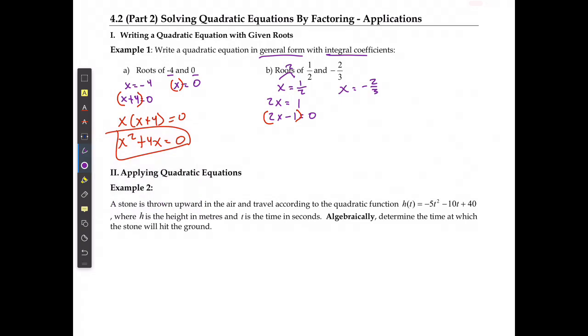I'm going to do the same thing on the right-hand side. I'm going to multiply both sides by 3, and get 3x is equal to negative 2. So I got rid of my fraction, and when I move the negative 2 over,